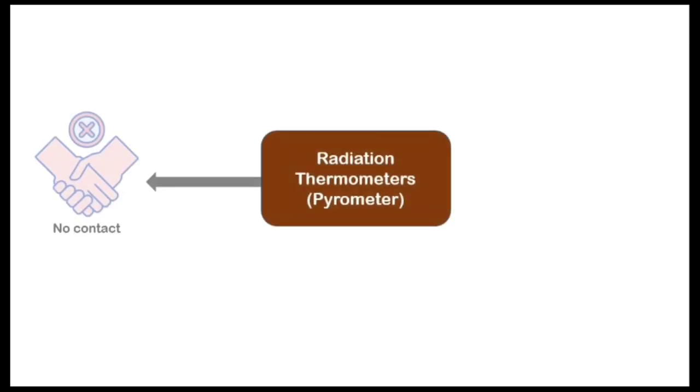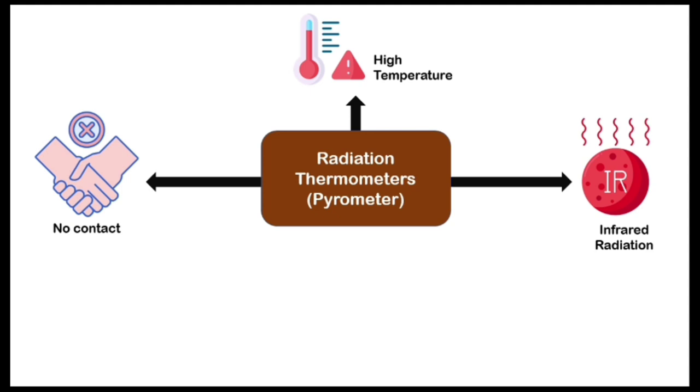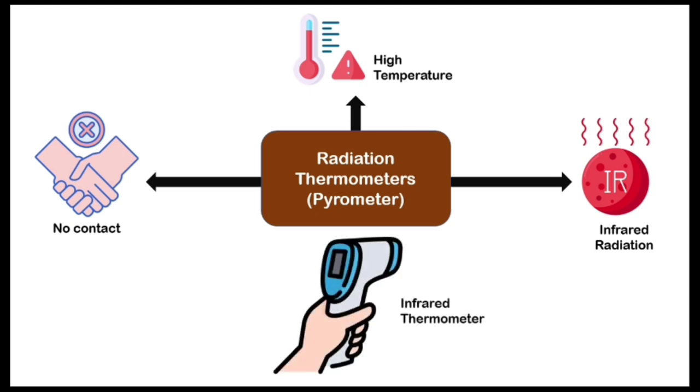Therefore, a radiation thermometer or pyrometer is a non-contact device which measures high temperature using infrared radiation emitted from an object. One of the best examples of a pyrometer is an infrared thermometer.